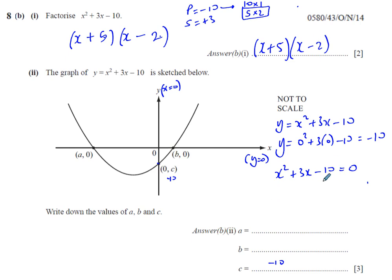It's exactly the same expression on this side of the equation as what we had factorized in part b part 1. So if we factorize this, which we've already done, we'll have (x + 5)(x - 2). Now, let's move on from here.